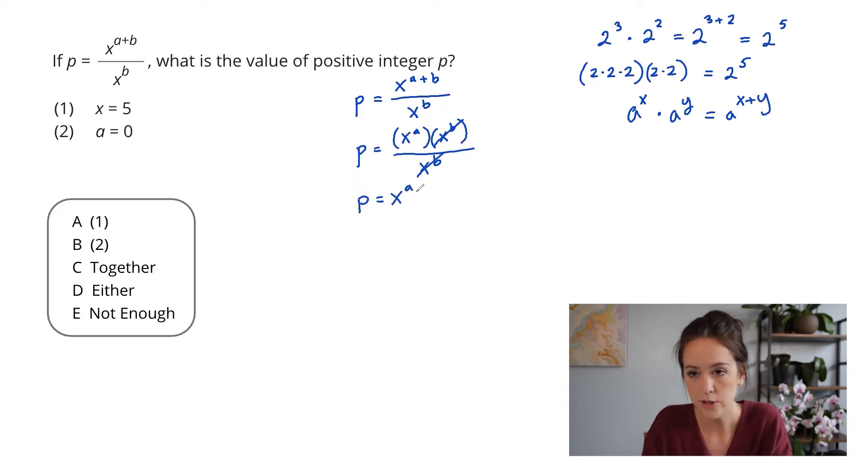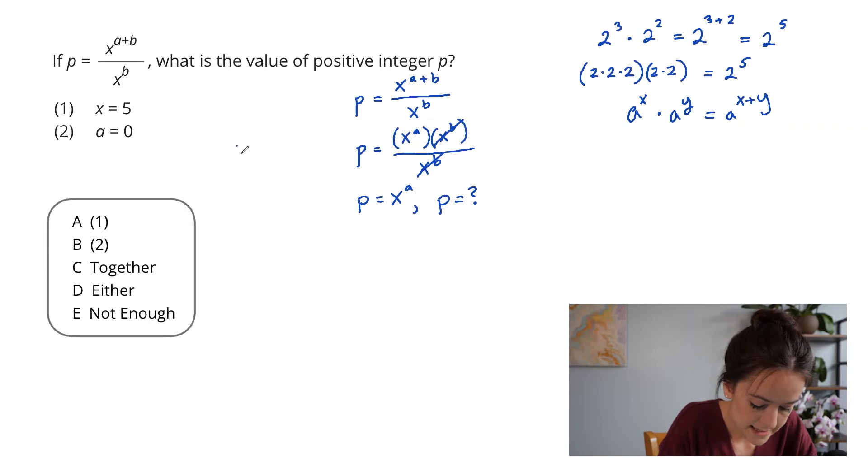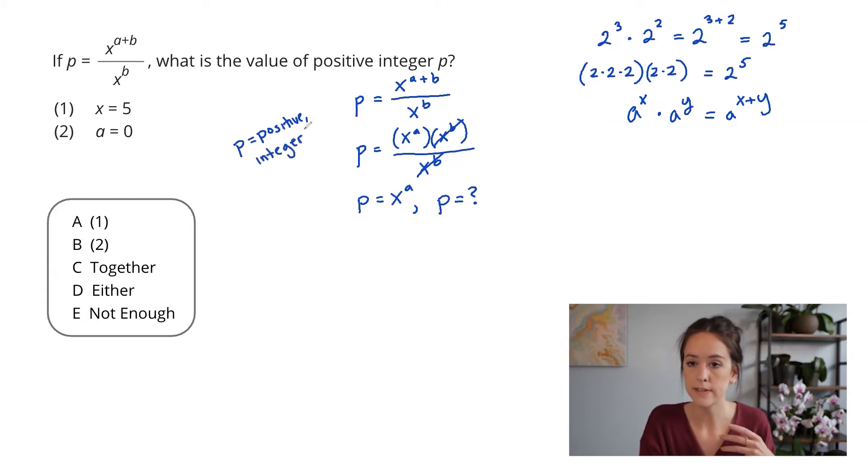Now the second thing I'm going to do before I jump into my statements is write down what I'm solving for and any additional information. So in this case, I want to know what p equals, what is x to the a equal to. And the last thing I want to do before I jump in is just note any little pieces of information. And in this case, the GMAT has told me that p is positive and it is an integer. And I'm going to write those down in case they're relevant later on.